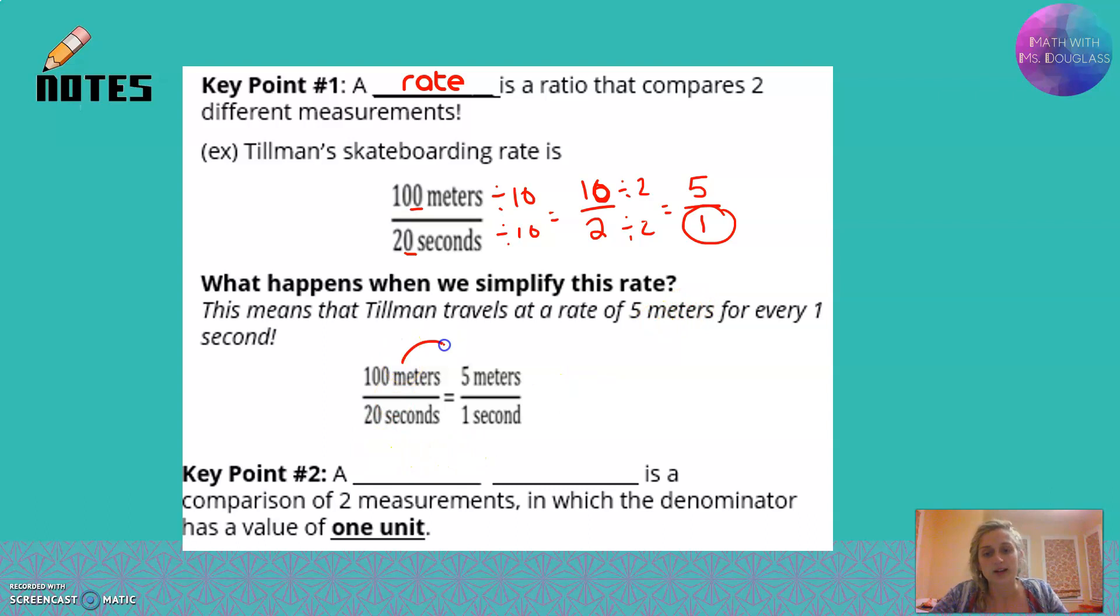If you saw right away, oh hey, I can divide these both by 20, that's fine. But you don't have to do it in one step if you're not comfortable. A unit rate, the whole topic we're talking about here, is comparing two measurements in which the denominator, sometimes the numerator, but most of the time the denominator, has a value of 1.